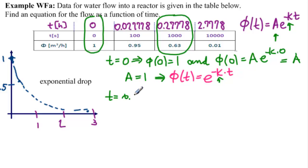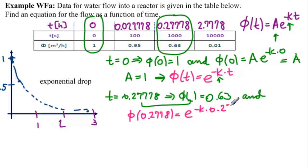So what does that say? At t equals 0.27778, we have phi of that equals 0.63. And on the other hand, if we use our function, we have phi of 0.27778 equals e to the minus k times 0.27778. So now, these two things we need to equalize and solve for k. So here we have e to the minus k times 0.27778 equals 0.63.